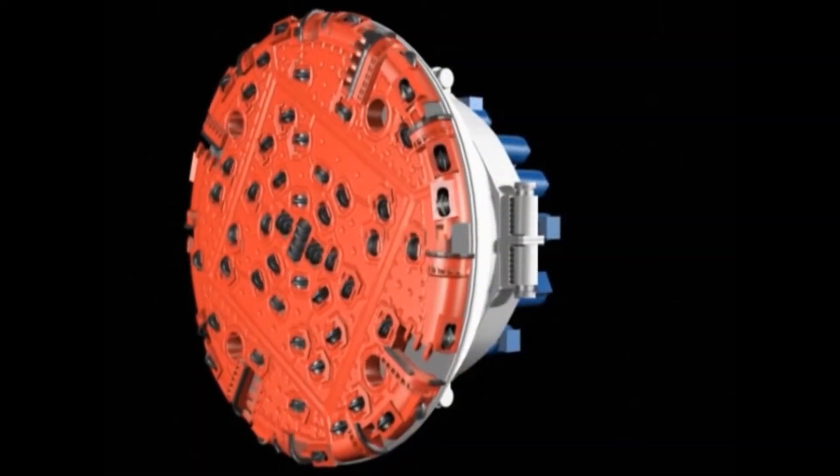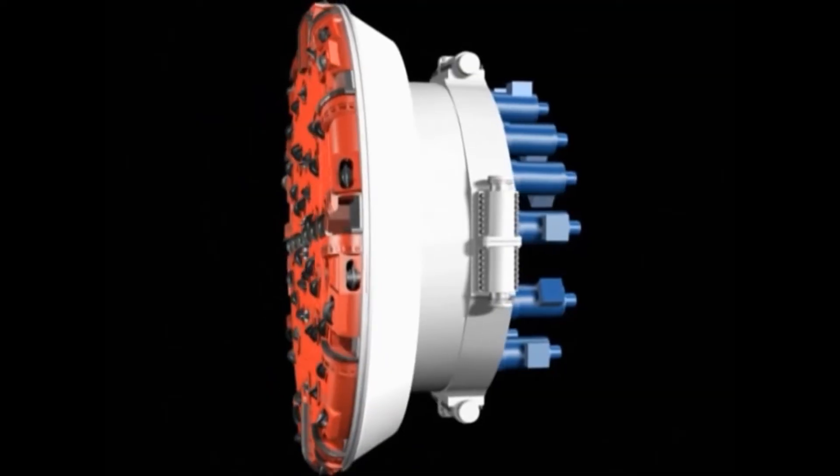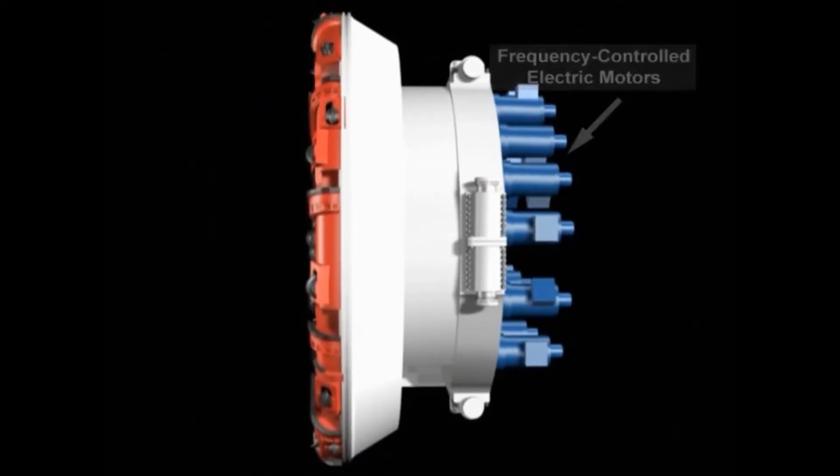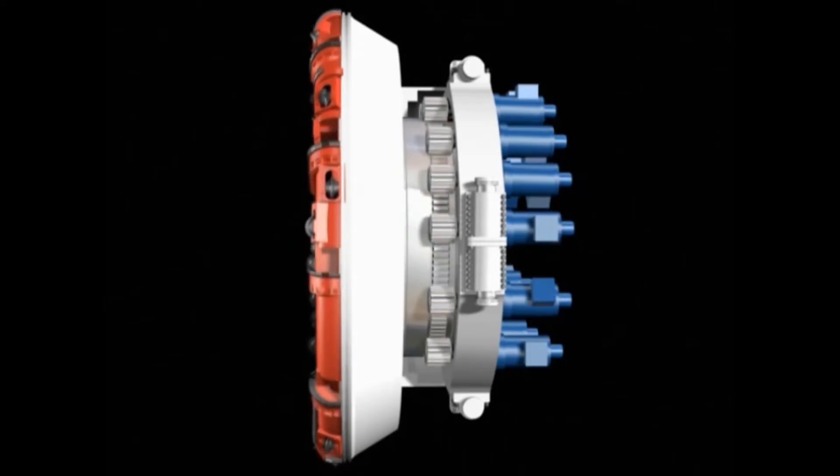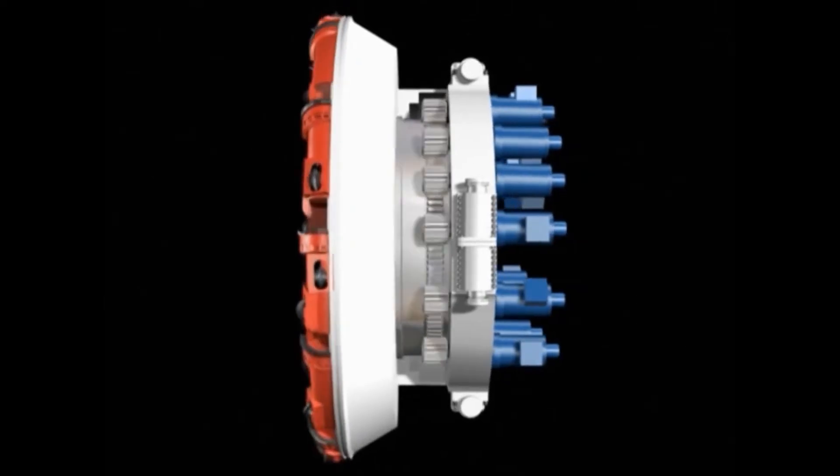The cutter head is driven over circularly arranged electric motors, which are frequency controlled. These electric motors drive the cutter head via planetary gearboxes and pinions into an external bull gear, which is part of the three-axis roller-type main bearing.